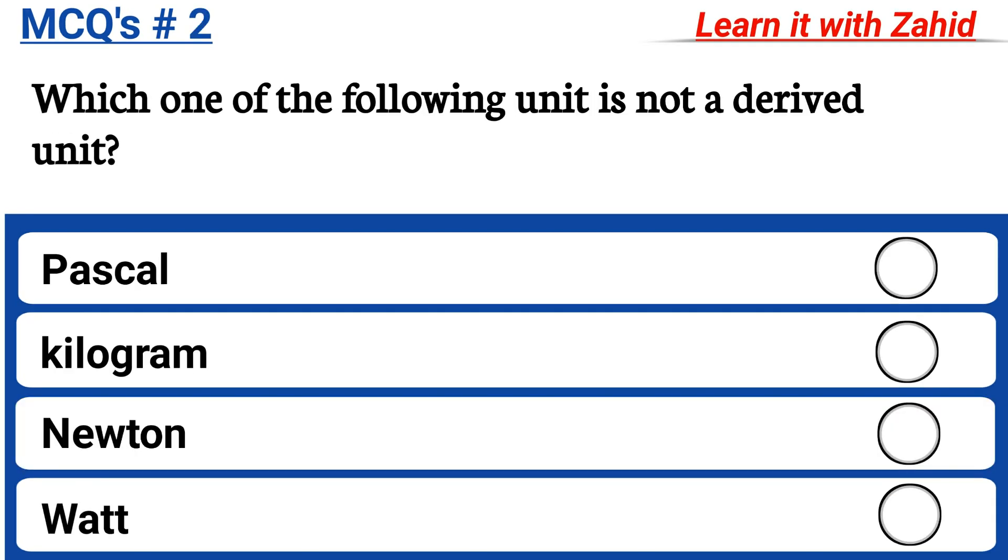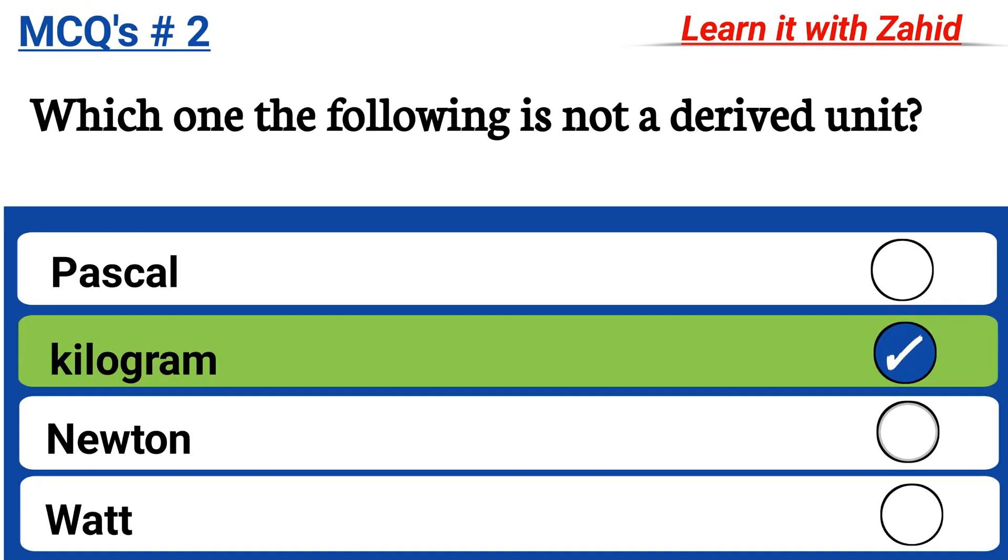Which of the following units is not a derived unit? Pascal, Kilogram, Newton, Watt and the correct answer is Kilogram.